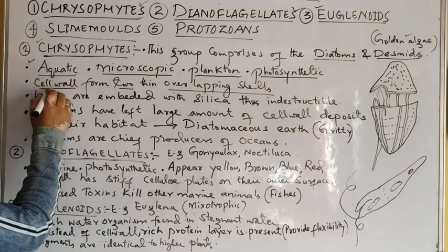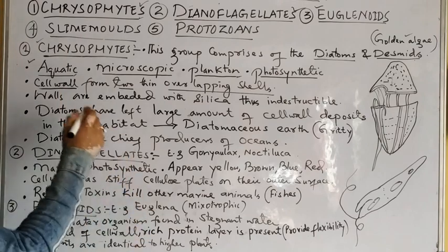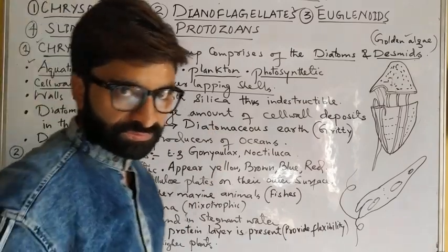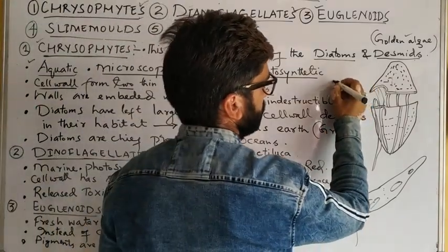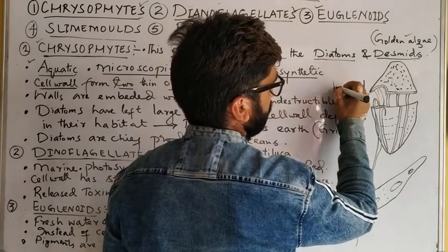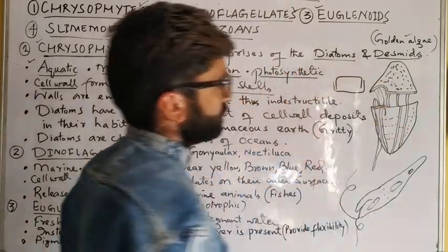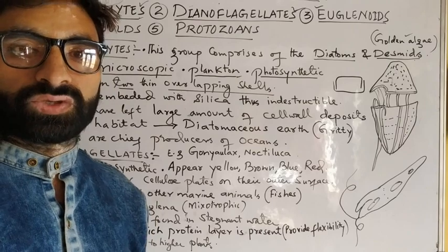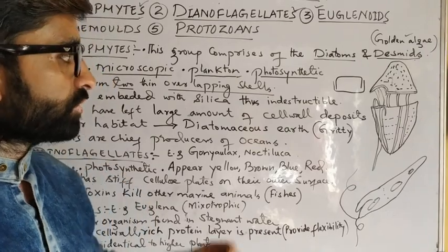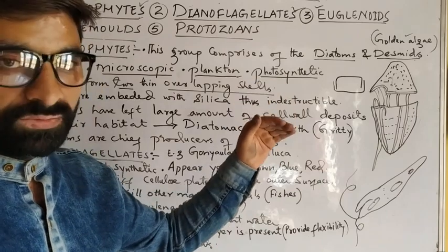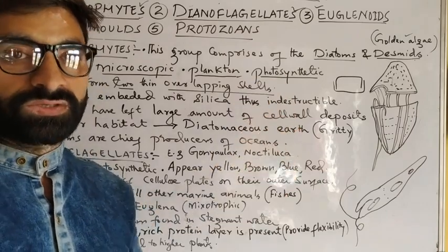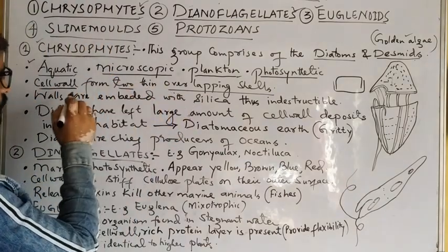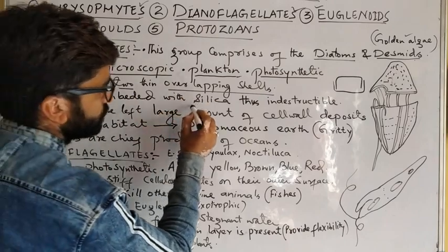The cell wall of diatoms is very important. It has two thin overlapping shells — a lower shell and an upper shell — which overlap with each other and form a structure like a soap box. On the cell wall of diatoms there is deposition of silica.